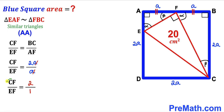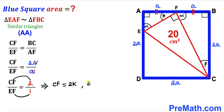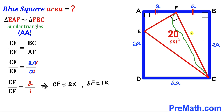The ratio of these two side lengths equals 2 to 1. Therefore CF equals 2 times some constant k, and EF equals 1 times the same constant k. Our task is now to find the value of this constant k.